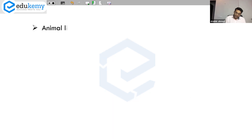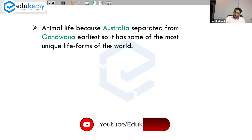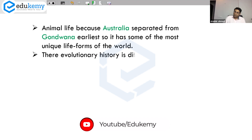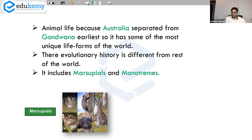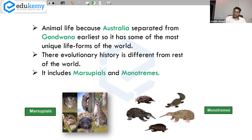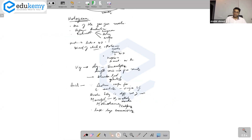Talk about animal life — because Australia separated from Gondwana the earliest, it has some of the most unique life forms in the world. Their evolutionary history is different from the rest of the world. It includes marsupials and monotremes — kangaroo, wallaby, koala, duck-billed platypus — these are unique species of the region. The region also lacks large carnivores. If you have written this much in your format, you are done. This is a 10-mark question.